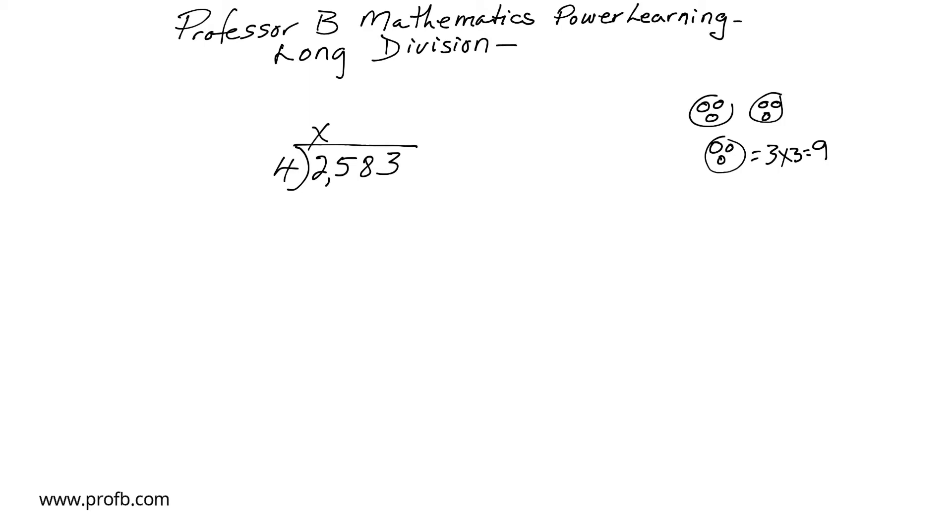And we go on with the untruths. We say four into twenty-five is six. Well, that's not twenty-five. That's two thousand five hundred. And that's not six. That's six hundred. And then we say six times four is twenty-four. Am I correct? And then we do our subtraction.